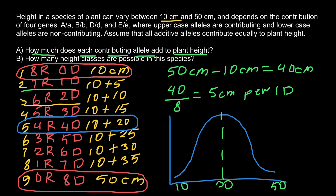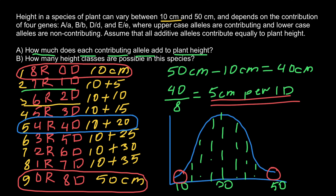On our distribution curve, the extremes fall on the far ends — three on each side. So in total there are nine height classes. This fits the theory that very extreme phenotypes are found in very few quantities, while intermediate phenotypes are found in the highest quantities. Returning to our questions: each contributing allele adds five centimeters to plant height, and there are nine possible height classes in this species. Thank you for your attention. Please subscribe for my new videos that I post almost every day. Goodbye.